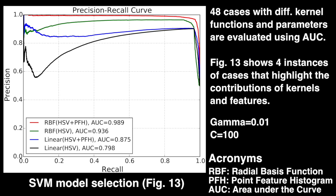Radial basis function kernel is utilized with gamma equals 0.01 and C equals 100. Gamma is the inverse of the radius of a single training point that can be taken into account for hyperplane estimation, and C defines the impact of misclassification on the cost function. To evaluate the performance of 3D point segmentation, we use the area under the curve, AUC, of the precision-recall curve, with higher AUC numbers implying better detection performance.